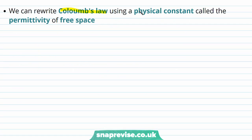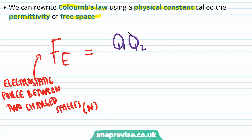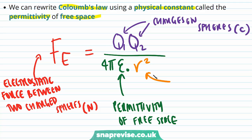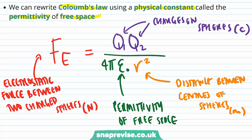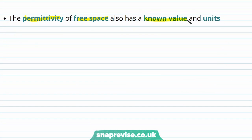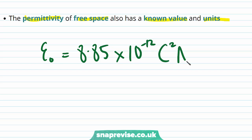We can now rewrite Coulomb's law using a physical constant called the permittivity of free space. We write the electrostatic force Fe as equal to the product of the charges on each of the spheres divided by 4π times the permittivity of free space, epsilon 0, times the distance between the spheres squared. The permittivity of free space also has a known value: epsilon 0 is equal to 8.85 times 10 to the minus 12 coulombs squared per newton per metre squared.